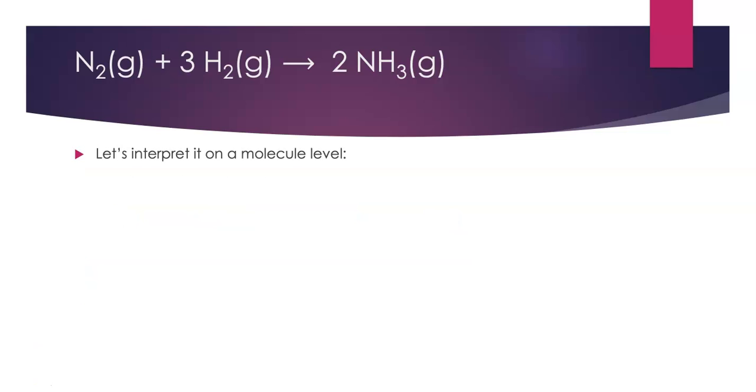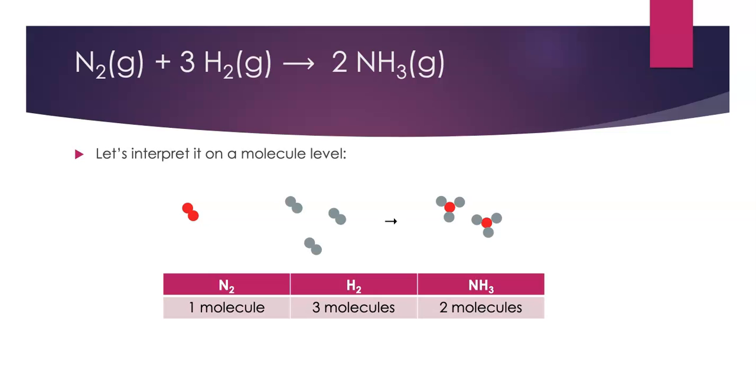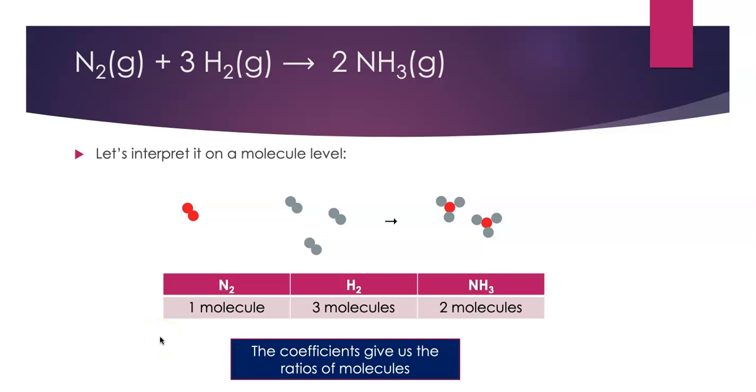We can think about it on a molecule level. We've got one nitrogen molecule reacting with three hydrogen molecules to form two NH3 molecules. It's important to note that the coefficients from the balanced equation tell us the ratios of the molecules and how they react. 1 N2 to 3 H2, 3 H2 to 2 NH3. We really use these relationships a lot in our stoichiometry unit.